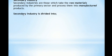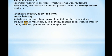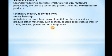Secondary industry is divided into heavy industry and light industry. Heavy industry, as the name suggests, involves industries that produce very large and heavy finished goods. By description, it is an industry that uses large sums of capital and heavy machines to produce materials — like steel — which can be used to produce other goods, as well as large finished goods such as ships, trains, vehicles, and planes, on a very large scale.